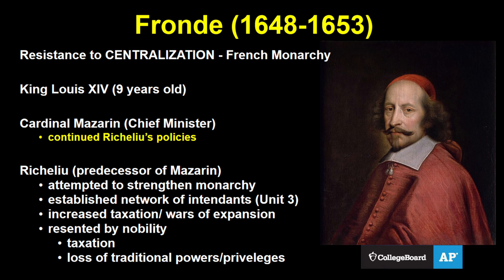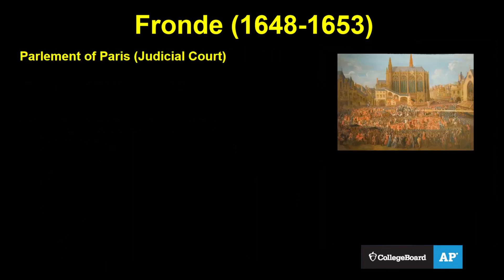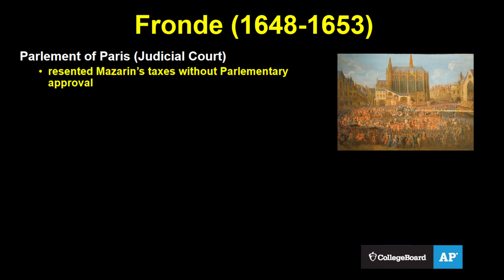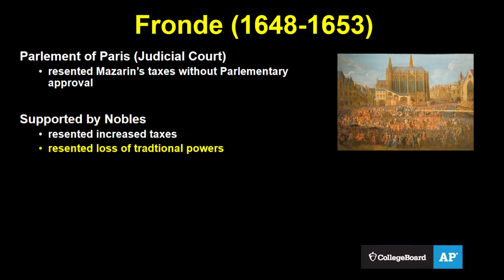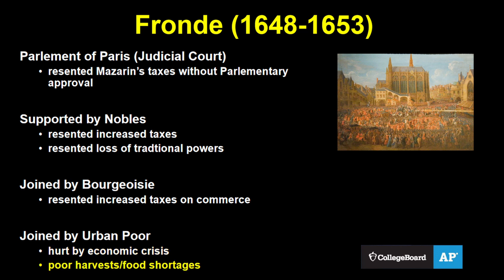Mazarin continued and expanded these policies, and also had a reputation for financial mismanagement — spending more than the crown could afford and needing to keep raising taxes. The first serious opposition came from the Parlement of Paris, a judicial court that resented the royal government instating new taxes without their approval. Then they were supported by many members of the nobility, who saw this as an opportunity to regain eroding power. There was also support from the bourgeoisie — the growing urban middle class hurt by taxes on business and trade — and further from the urban poor suffering from economic crisis and dwindling food supplies due to poor harvests.